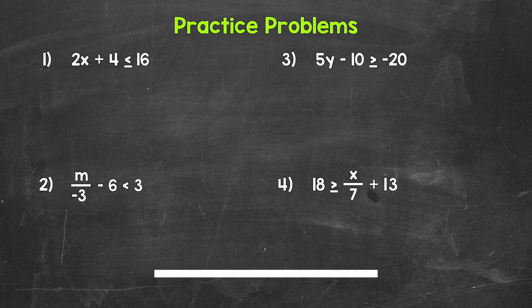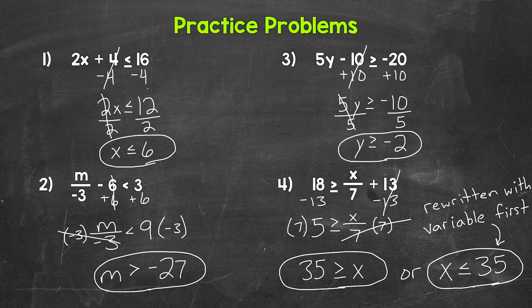Okay, so that was five minutes. Let's go over the answers. For number one, x is less than or equal to 6. For number two, m is greater than negative 27. Moving on to number three, y is greater than or equal to negative 2. And lastly, for number four, x is less than or equal to 35. You'll notice I rewrote that with the variable first — either form works. There's how to solve two-step inequalities.